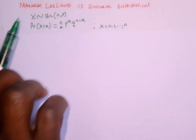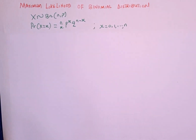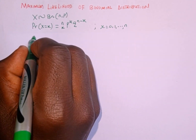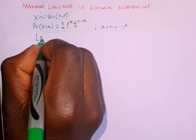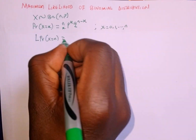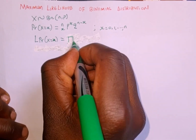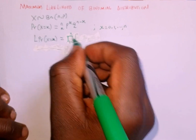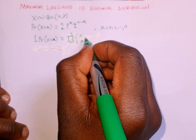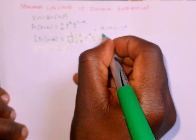We are looking for the maximum likelihood of this function. The first thing we are going to do is to take the likelihood. So we take the likelihood of P(X = x), which is equal to the product as i raises from 1 to n of the distribution function — n-combination-x, times p raised to the power of x, times q raised to the power of n minus x.